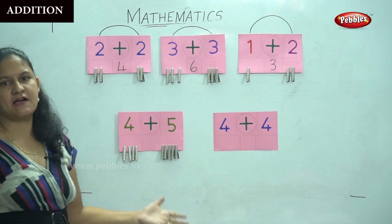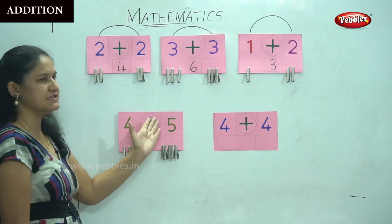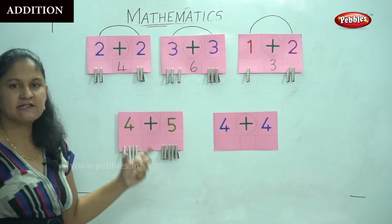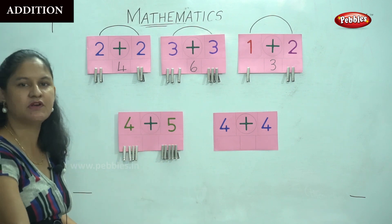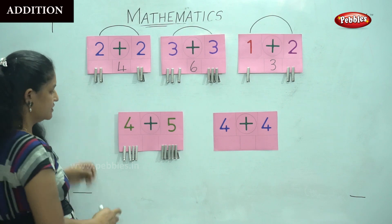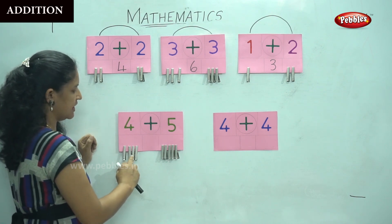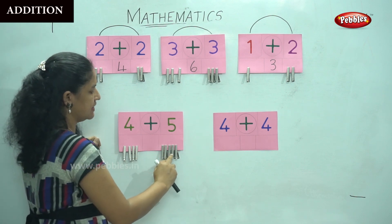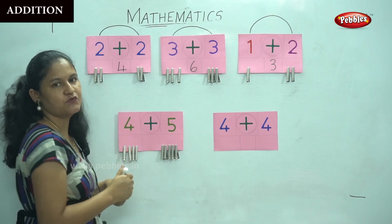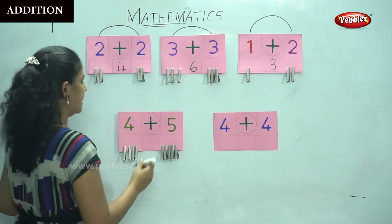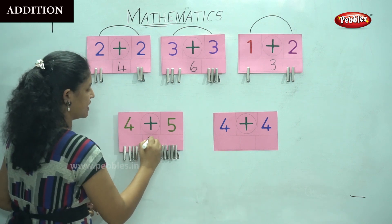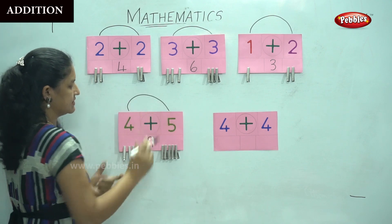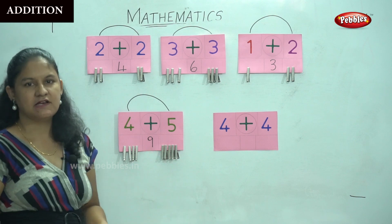Now I want to know the answer for four plus five. By counting the number of pegs clipped on the chart: one, two, three, four, five, six, seven, eight, nine. Four plus five gives me nine. So four plus five is nothing but number nine.